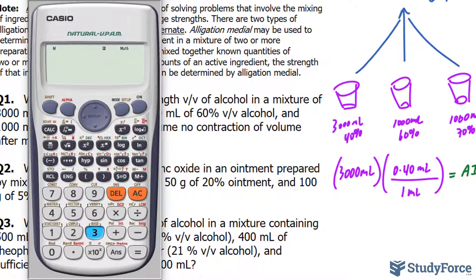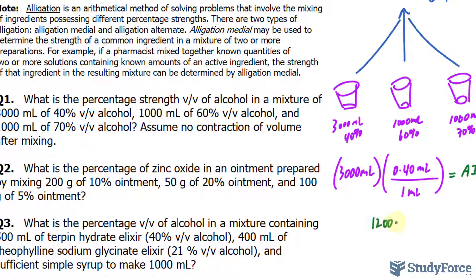So using your calculator, 3000 times 0.4 makes 1200 milliliters of alcohol found only in that container. So we do this again for this and for that, and we sum up those values.